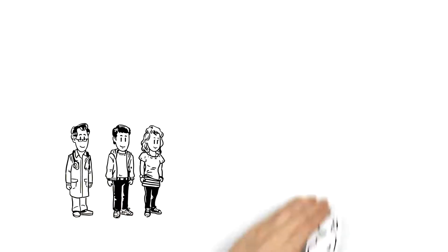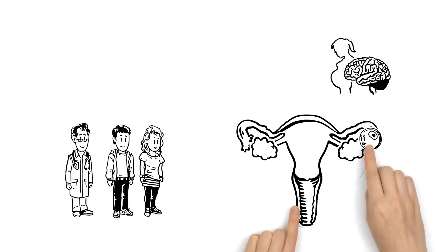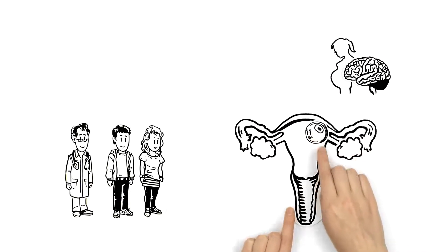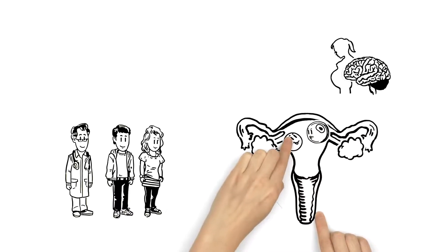In order for a woman to get pregnant, her body releases an egg cell from her ovaries. It moves into the womb where it waits for a sperm cell to fertilize it.